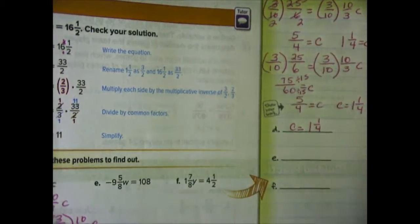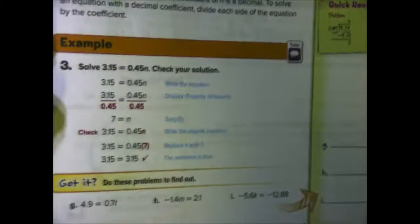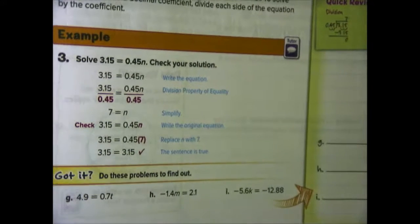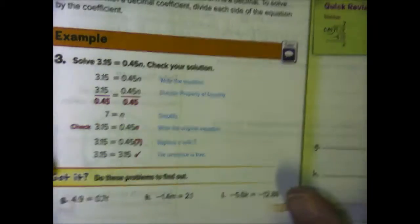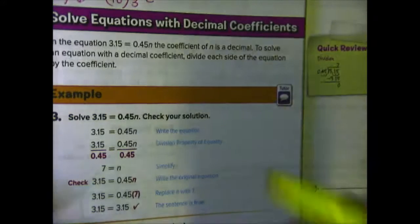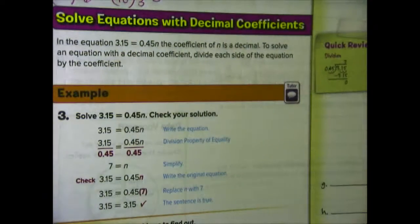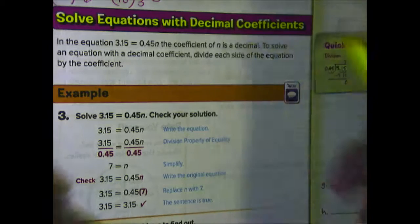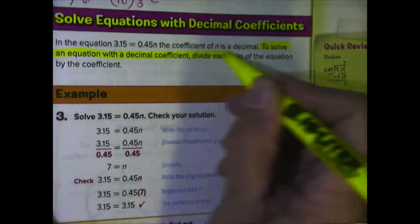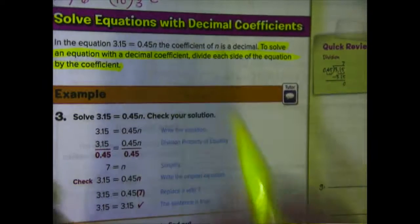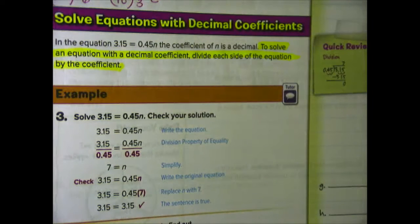Pause your video and work E and F on this page — don't skip them. Try them and then we'll go back and look at them together in class. Now that you've finished examples E and F on page 113, let's take a look at example three. This time we're solving equations with decimal coefficients. Instead of the coefficient being a fraction, we have a decimal coefficient.